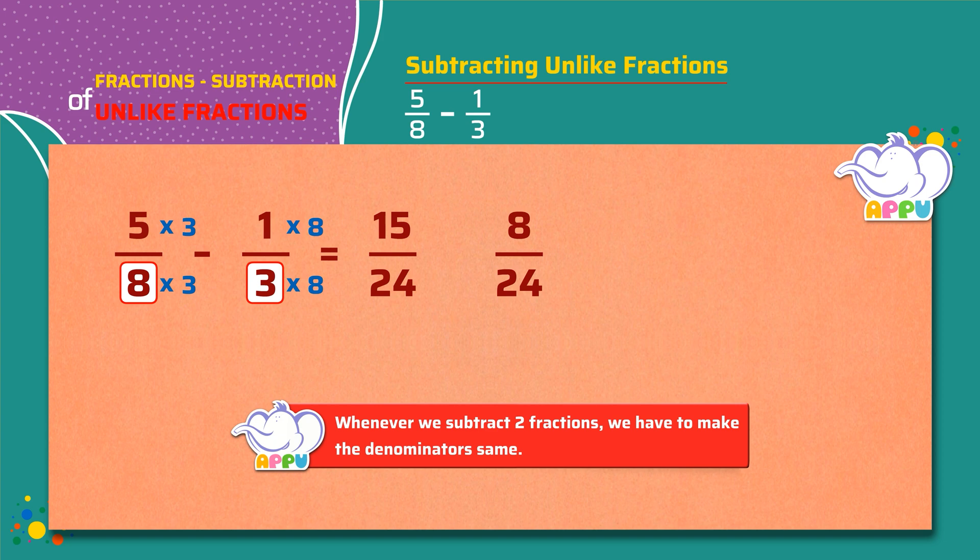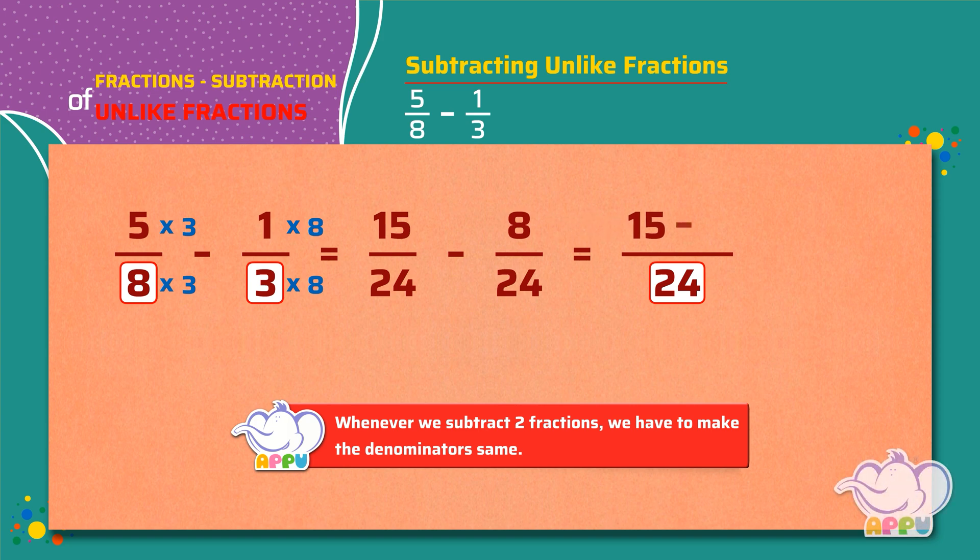This becomes 15 by 24 minus 8 by 24. Now the denominators are the same for both the fractions. That is 24. We write the denominator as 24 and subtract the numerators. 15 minus 8 equals 7. The answer is 7 by 24.